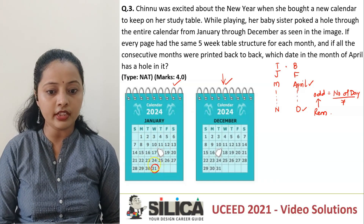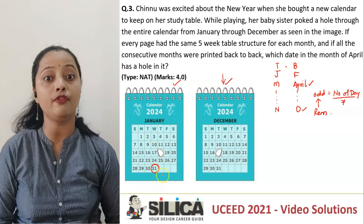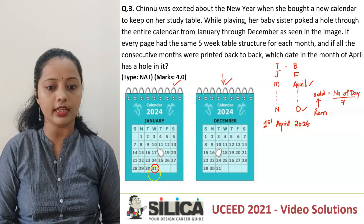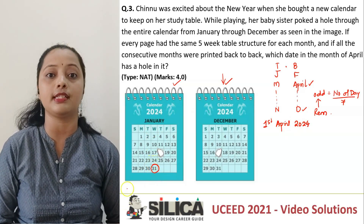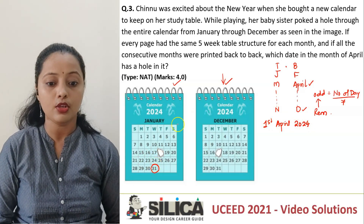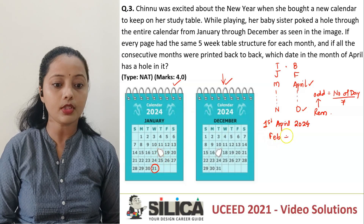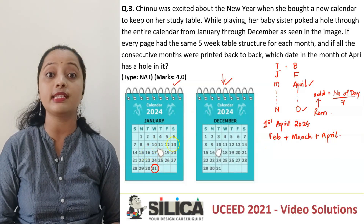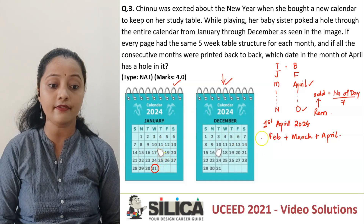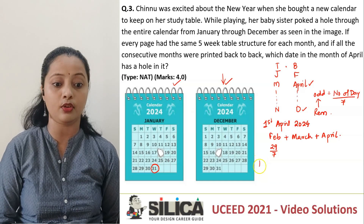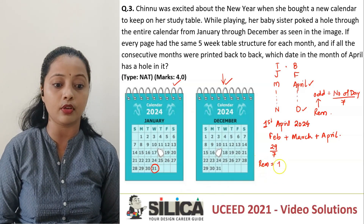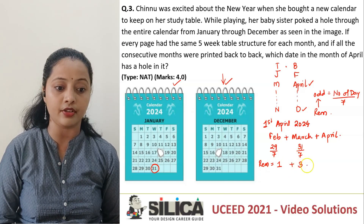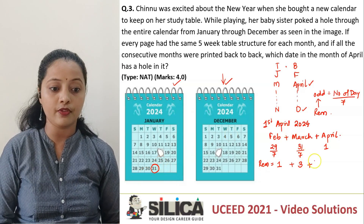In January, we know 31st is on Wednesday. Let's find out on what day 1st of April 2024 will lie. We know 31st of January 2024 lies on Wednesday. We'll consider February, then March, then April. In February 2024, it's a leap year, so February has 29 days. 29 divided by 7 gives a remainder of 1, so 1 odd day. In March, which has 31 days, 31 divided by 7 gives a remainder of 3. For April, we need 1st of April, so we take that as it is.